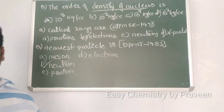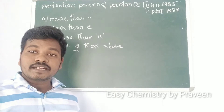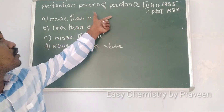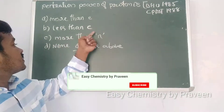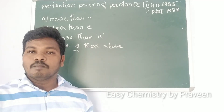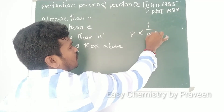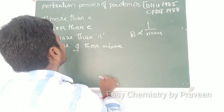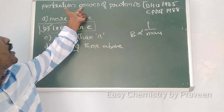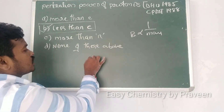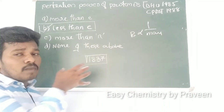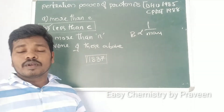This question was asked in BHU 1985 and CPMT 1988 and 1982: the penetration power of the proton is — more than the electron, less than the electron, more than the neutron, or none of these? Penetration power is inversely proportional to mass. The electron has less mass, so it has more penetration power. The proton is 1837 times heavier than the electron, so the penetration power of the proton is less than that of the electron.